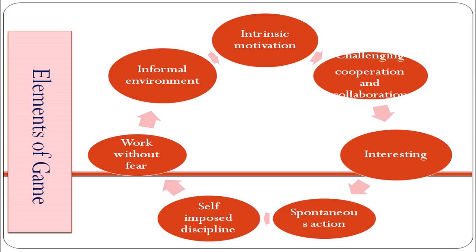Second is spontaneous action — when we play, all activities come in a very spontaneous manner. Third is self-imposed discipline. Discipline cannot be inculcated from outside; it should be self-imposed. Then only any task can be done beautifully and without fear. Where there is fear, work cannot take place. There is no compulsion, so students play and learn spontaneously. Fourth is an informal environment. In play-way method, there is an informal environment where by doing different activities and making some mistakes, children learn spontaneously.